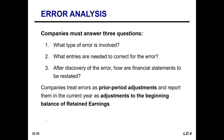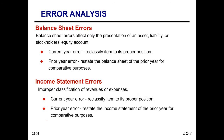Error analysis: companies must answer three questions — what type of error is involved, what entries are needed to correct the error after discovery, and how are the financial statements to be restated? Companies treat errors as prior period adjustments and report them in the current year as adjustments to the beginning balance of retained earnings. Balance sheet errors affect only the presentation of an asset, liability, or stockholders' equity account. If a current year error, reclassify the item to its proper position. If a prior year error, restate the balance sheet of the prior year for comparative purposes.